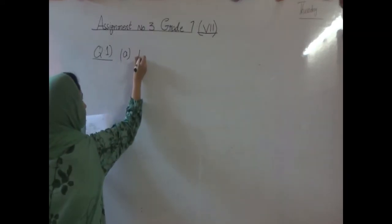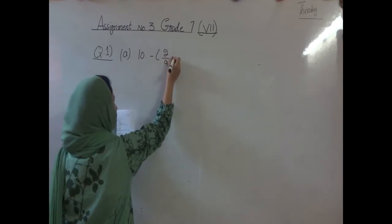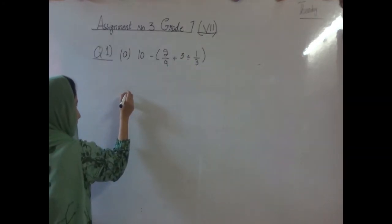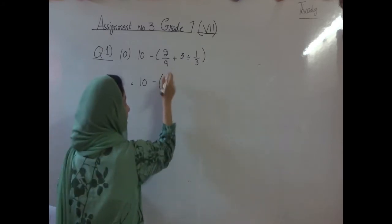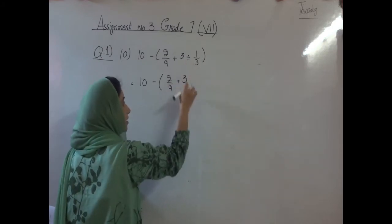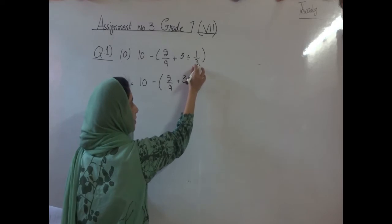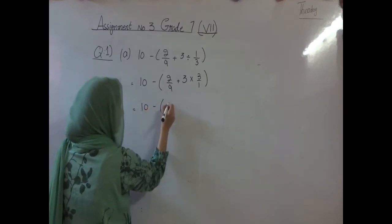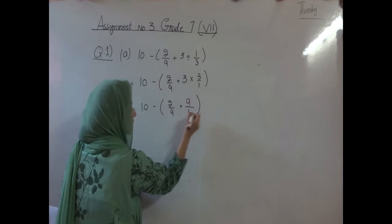Question 1, Part A: 10 minus small bracket (2 by 9 plus 3) then divide by 1 by 3, small bracket close. First we will solve the brackets. We have 2 by 9 plus 3, then convert the division into multiplication — when division converts to multiplication, the value flips. So it becomes multiply 3 by 1. Then 2 by 9 plus 3: 3's are 9, divided by 1.